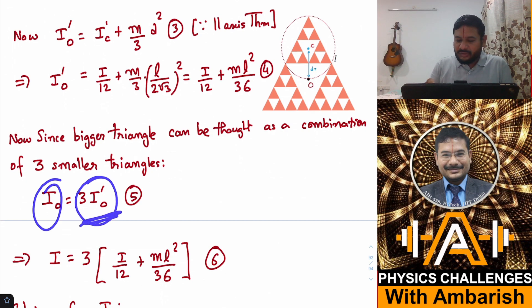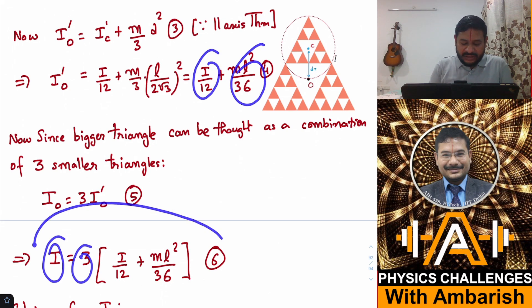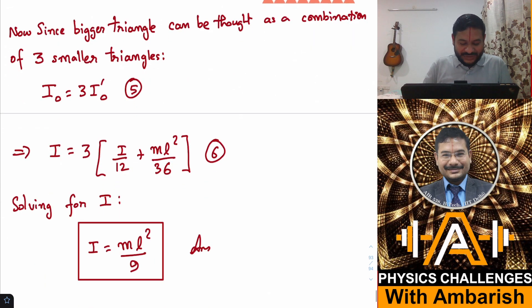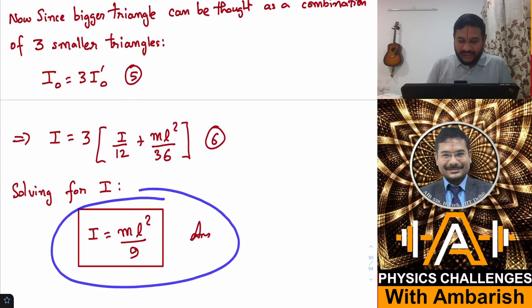Three triangles, so I equals three times (I/12 + mL²/36). This equation we can very easily solve for I, and if you solve this for I you get I = mL²/9. So that's our final answer.